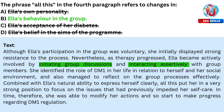The correct answer is B, Ella's behavior in the group. 'All this' refers to the ways Ella actively engaged with her peers, initiated discussions, and reflected on her experiences, all of which represent a shift in her behavior in the group. This active involvement ultimately contributed to her progress in managing DM1.